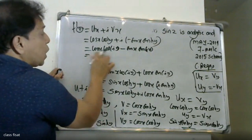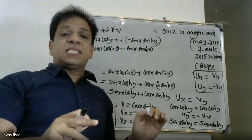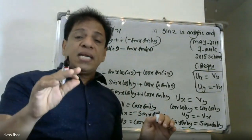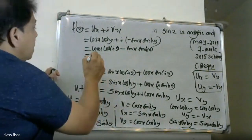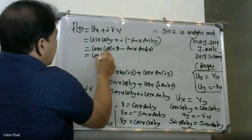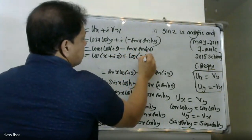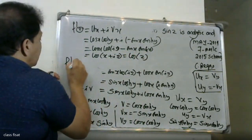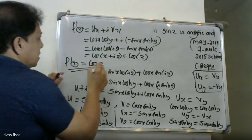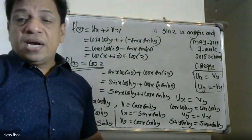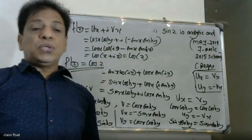Using the identity cos(A+B) equals cos(A)cos(B) minus sin(A)sin(B), we can verify the result for the derivative of sin(z), which equals cos(z).